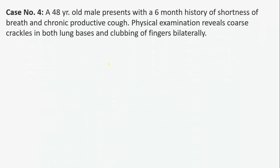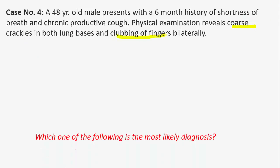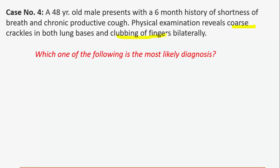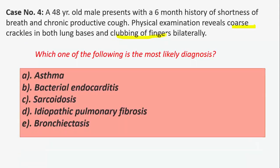Case number four: a 48-year-old male presents with a six-month history of shortness of breath and chronic productive cough. Physical examination reveals coarse crackles at both lung bases and bilateral clubbing of the fingers. The most likely diagnosis is again bronchiectasis.